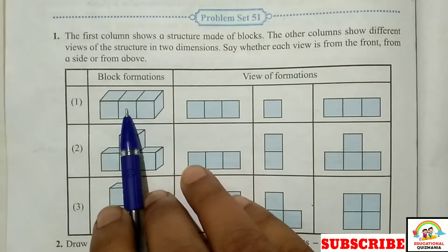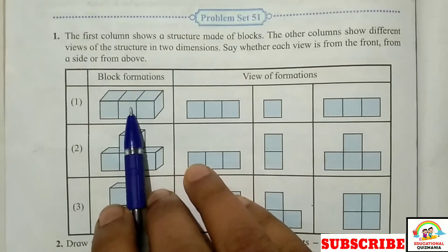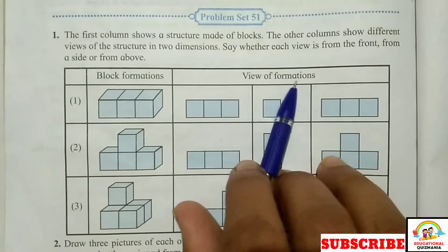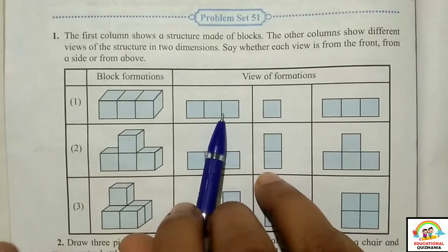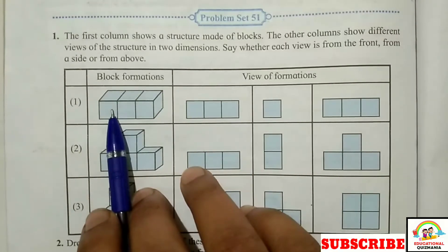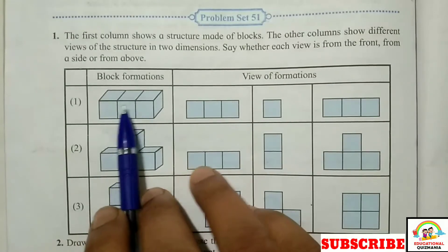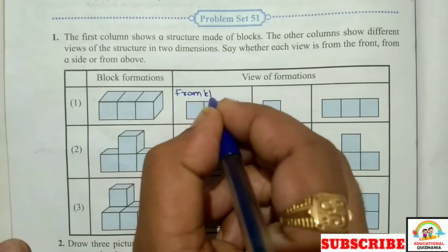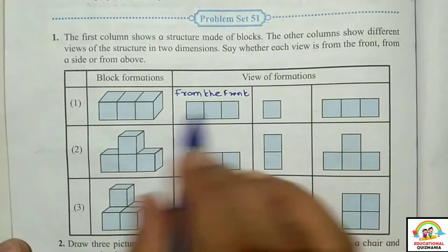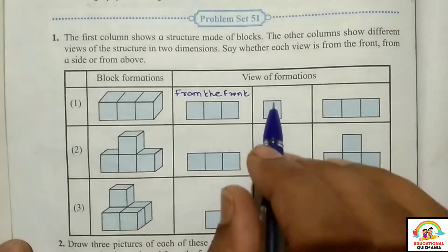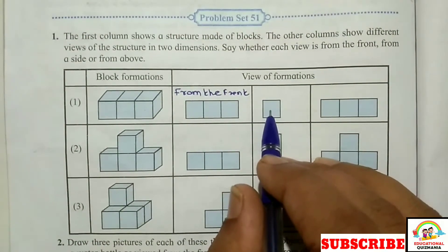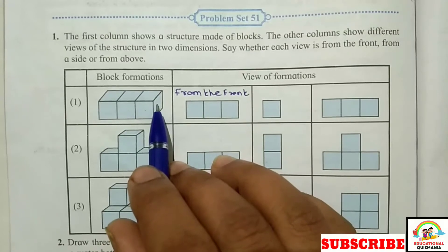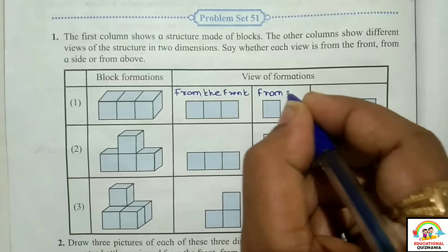See the first block formation. Now see the view of the formation. Look at the first view — this view is from the front, meaning it is the view seen from the front. Now look at the next view — this is not seen from the front, not from above. This view is seen from the side, so it is from the side.